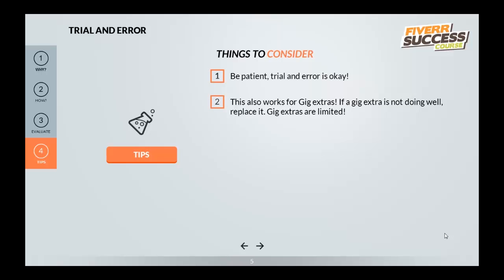Remember this also works great for gig extras. If your gigs are all selling well, you can start experimenting with your gig extras too, and hopefully increase the average price of your gigs. If there are gig extras that are never selling, why keep them around? Play with them — offer more, offer something completely different, or create variations on the titles. You'd be surprised how much more they'll sell. Your gig extras are limited depending on your level, so don't waste slots on extras that aren't selling when something else could sell better.